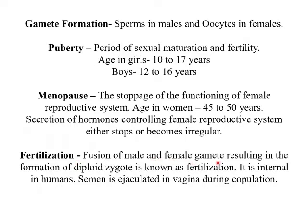Fertilization is the fusion of male and female gametes resulting in the formation of a diploid zygote. In human beings, the egg is immotile and is brought into the uterus through cilia in the oviducts, while sperm cells are motile. The sperm comprises a head containing genetic material and a tail for movement, and it also has mitochondria to provide energy for movement.